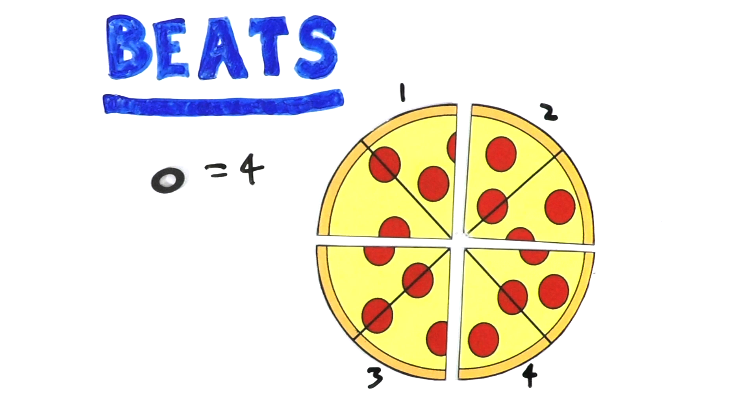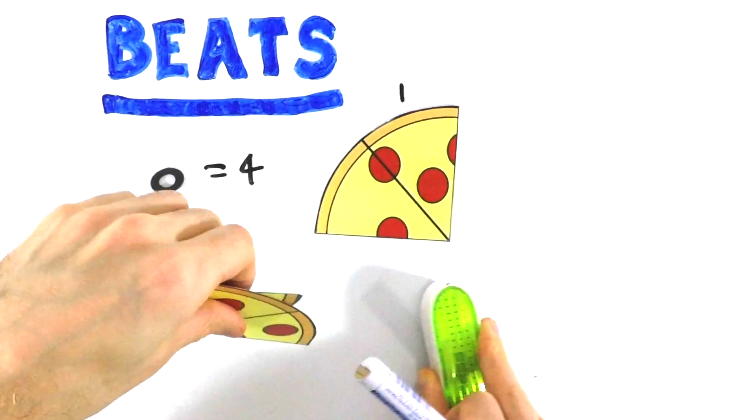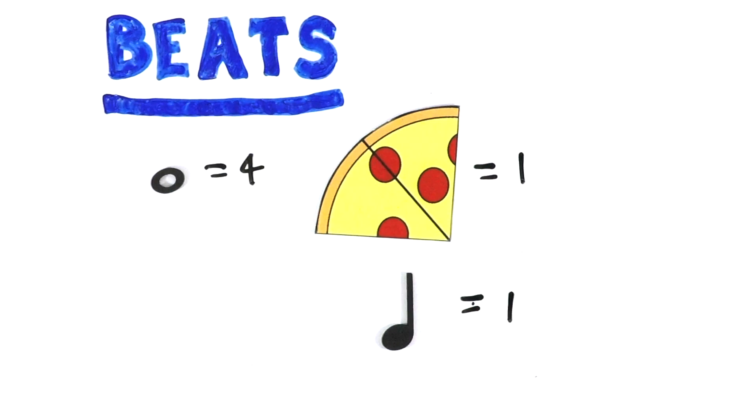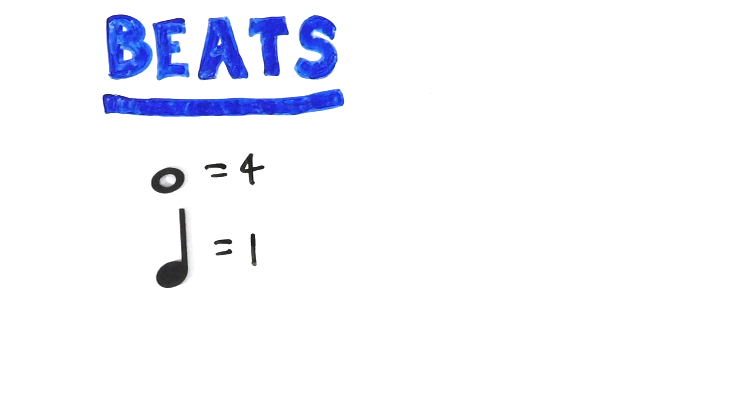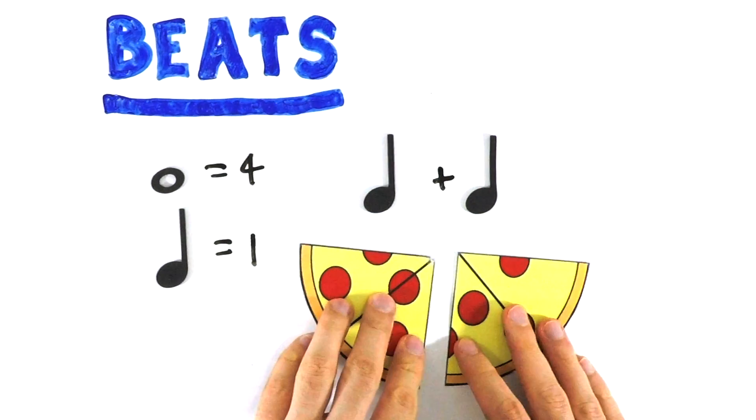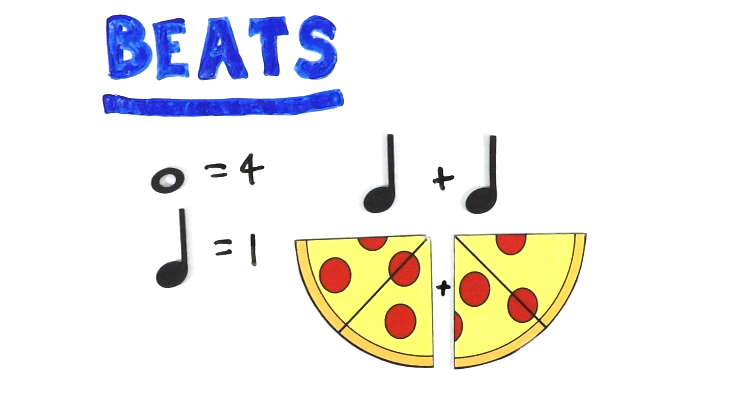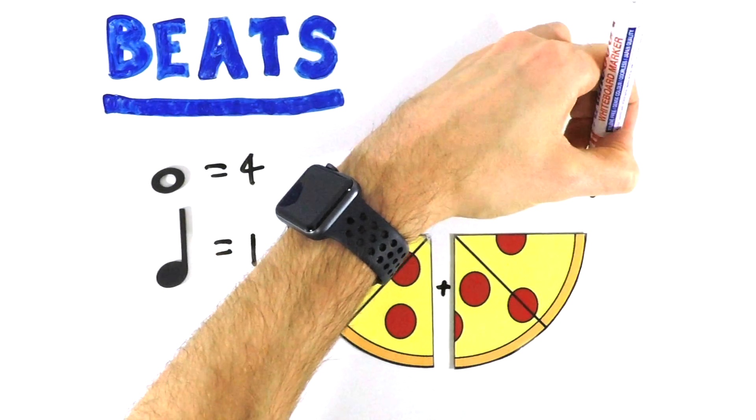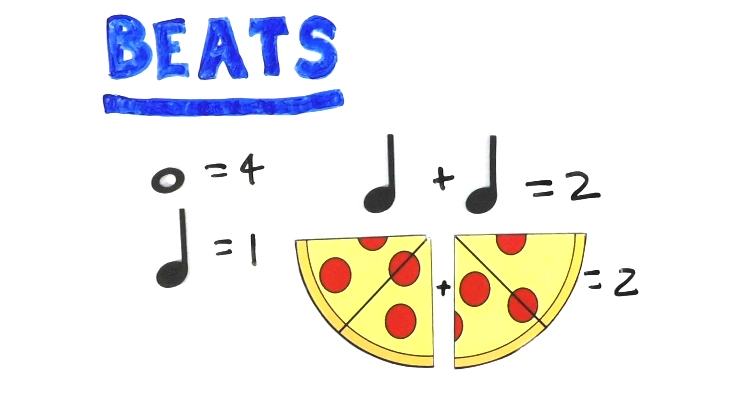And if we break up our whole pizza or our whole note into quarter slices or quarter notes, then each one of these quarter slices and quarter notes are going to equal one. But when we put two of our quarters together, either our quarter notes or quarter pizza slices, can you guess what our half pizza or half note would be worth? If you said two, you would be correct.